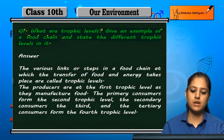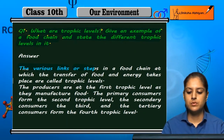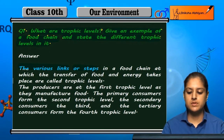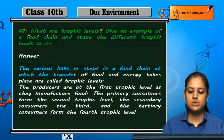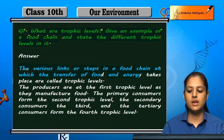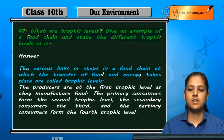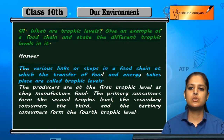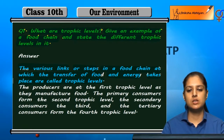The various links or steps in a food chain at which the transfer of food and energy takes place are called trophic levels. So trophic levels are the steps and links at which food and energy exchange in a food chain.